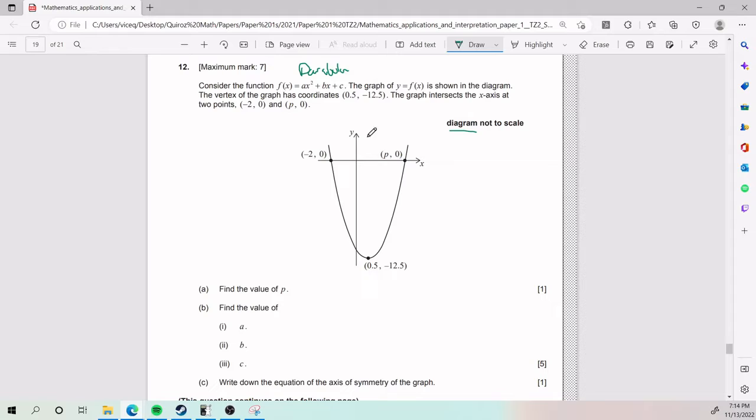The vertex of the graph has coordinates 0.5, negative 12.5, that's this guy here. The graph intersects the x-axis at the points negative 2, 0 and p, 0. So all of that is in our diagram, and for part a, we need to find the value of p.